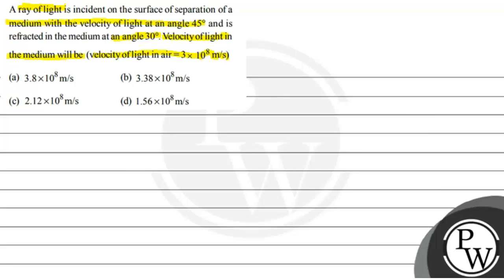So the key concept is: we know that if there is a separation, this is the surface of separation, okay, and this is the normal.